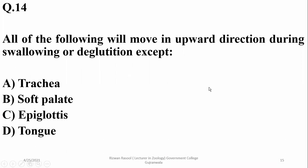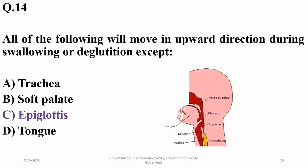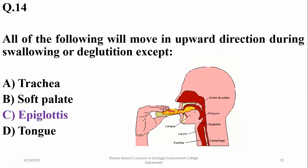The epiglottis is forced to move downward in a more or less horizontal position while swallowing, while the trachea, soft palate, and tongue show upward movement. So the right option is charlie. As you can see, when the food bolus pushes the epiglottis, it moves downward in a more or less horizontal position to direct the food bolus into the esophagus.